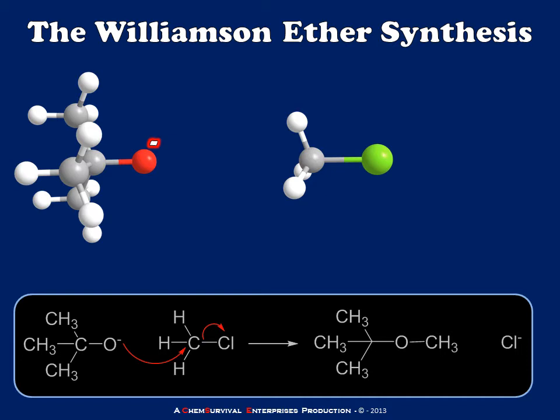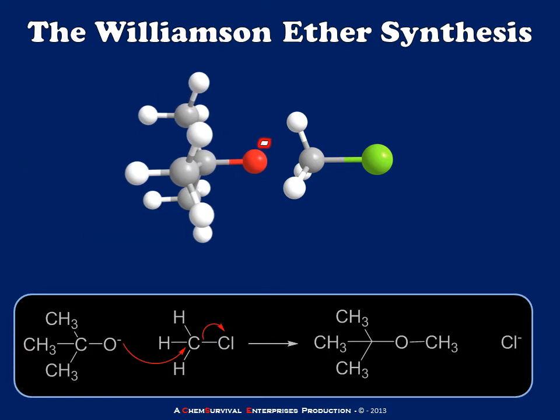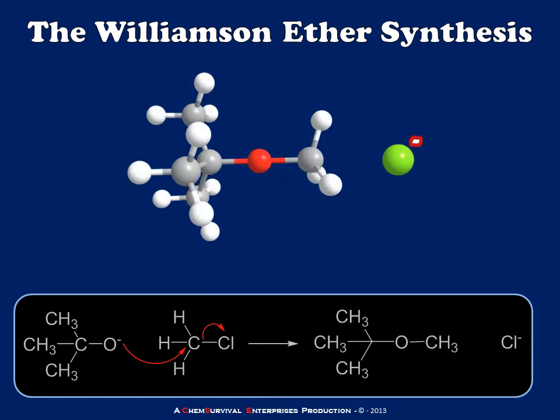Once I've generated my alkoxide ion, I expect it to attack any electrophile it can get to. In this example, methyl chloride is the substrate. Being a methyl alkyl halide, methyl chloride is extremely well suited to an SN2 reaction — there's really nothing obstructing our alkoxide from attacking. We go through an SN2 reaction, which generates our t-butyl methyl ether and a halide ion as a byproduct. This is an effective way of making t-butyl methyl ether.